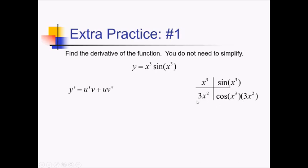Putting it back together with the ribbon, we've got 3x squared times sine of x cubed, plus x cubed cosine of x cubed times 3x squared.